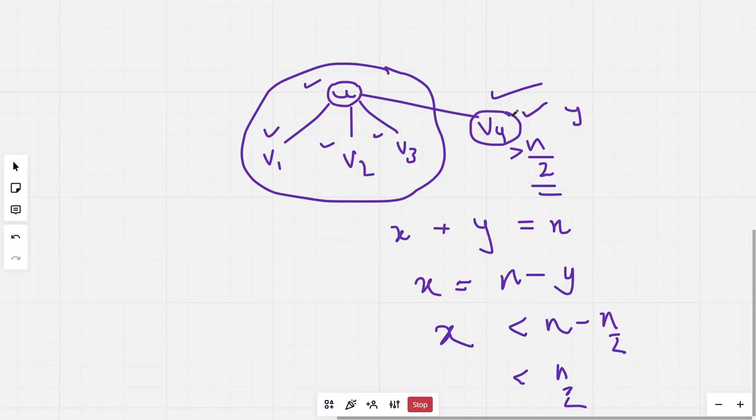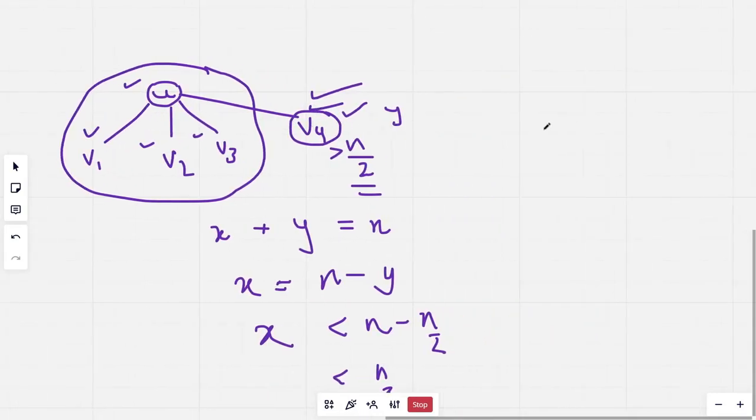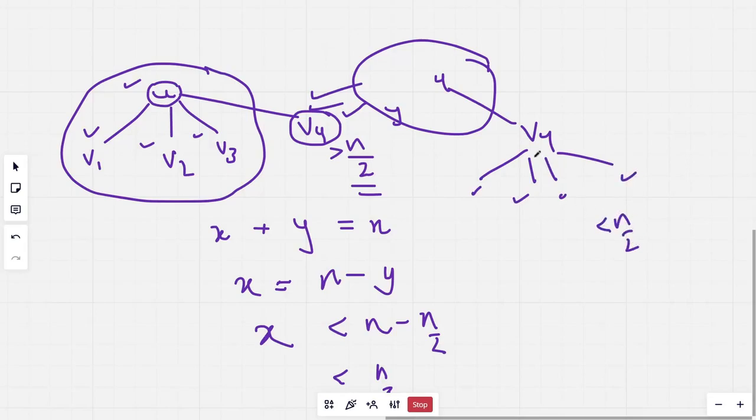And the centroid will lie somewhere in this particular subtree, right? For v4, this part of the tree we have already calculated, so we will not go back, and we will look at all the children of v4, the subtree sizes for all the children. Now if all of them are less than n by 2, then v4 would be our centroid.